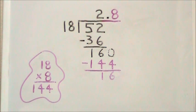Now we're left with 16. Once again, 16 is less than 18, so we have to add another zero. Now we already know that 18 will go into 160 eight times without going over. And we're going to get the same thing each time.